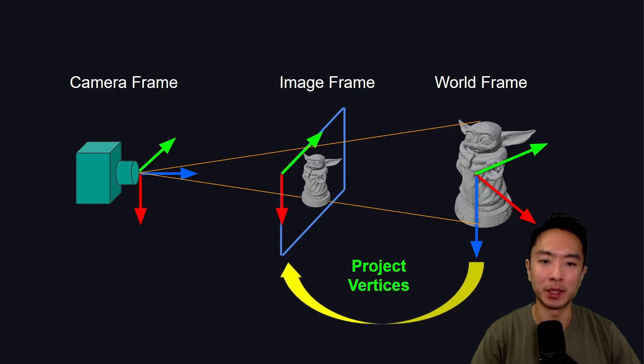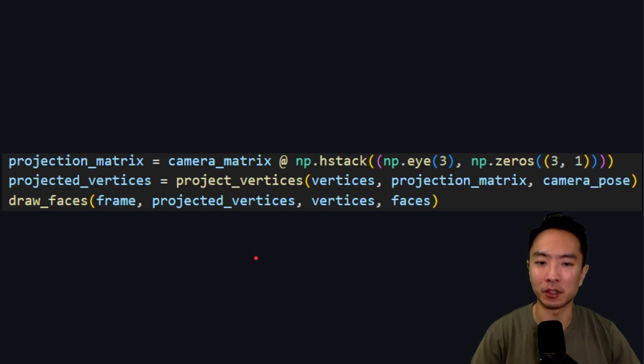Now finally, we could project our Baby Yoda from the world frame to the image frame by projecting the vertices. You can see this is the core algorithm. Our projection matrix is calculated from our camera matrix, and then from there, we get our projected vertices by calling our project vertices function. And lastly, we call our draw faces so we can see each individual face of our OBJ model.